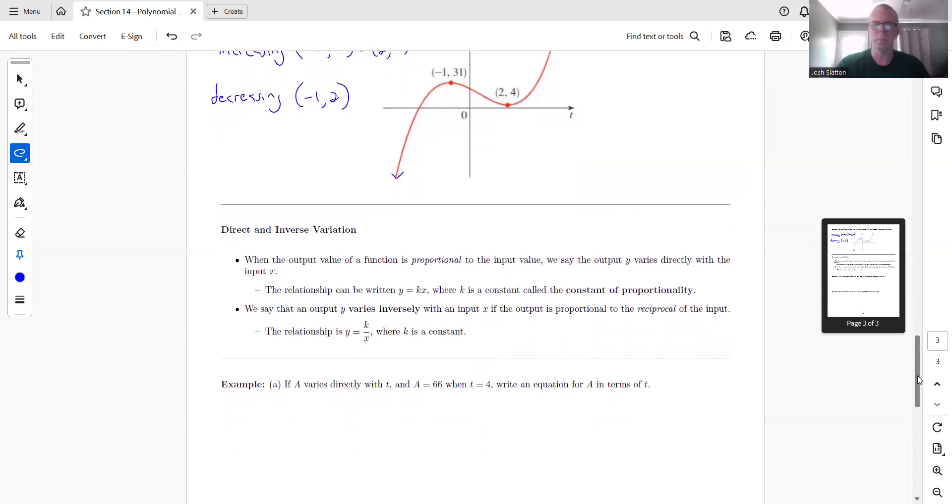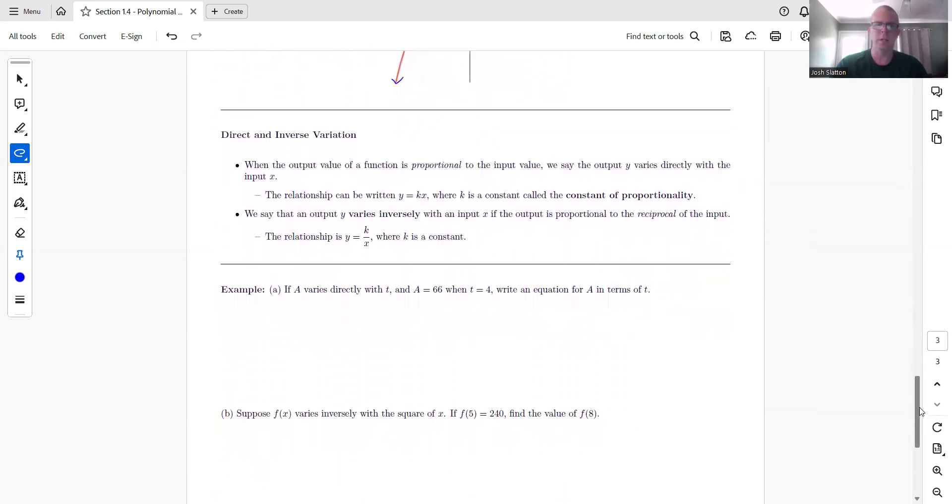All right. So the last little part in this section is talking about variation. So when the output value of a function is proportional to the input, we say the output Y varies directly with the input X. The relationship can be written as Y equals KX and K is called the constant of proportionality. So before we look at this part, let's look at this first example.